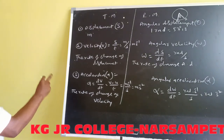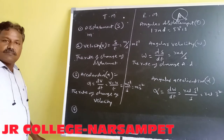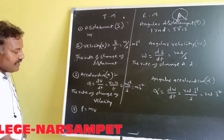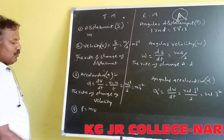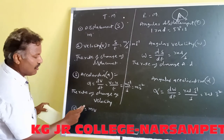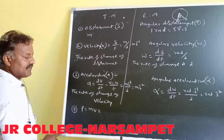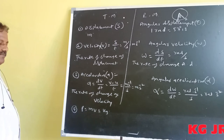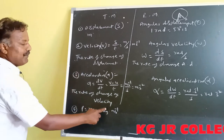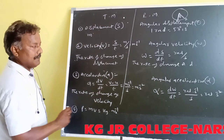The fourth important quantity is momentum. Momentum formula: p equals mv, where m is mass and v is velocity. The definition of momentum: the product of mass and velocity is called momentum. Units of momentum: mass unit is kilogram, velocity unit is meter second minus one, so momentum unit is kilogram meter second minus one.